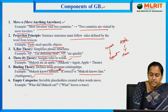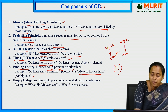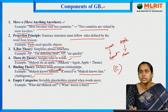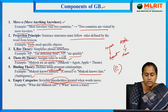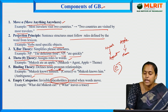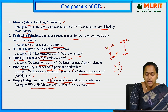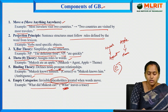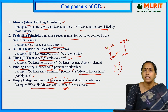Empty category, represented as 'e,' refers to invisible placeholders created when words move from one place to another. For example, in 'What did Mukesh eat?' there is an invisible gap — a trace — representing where the word moved from.